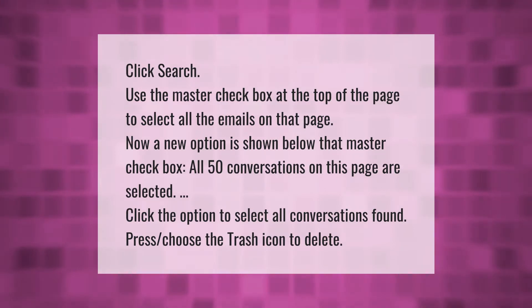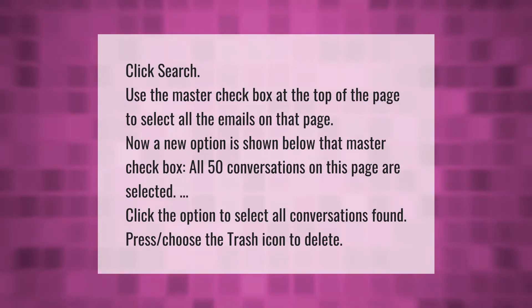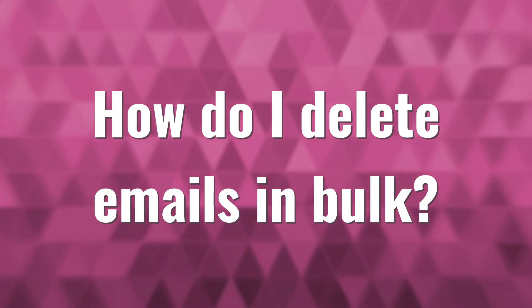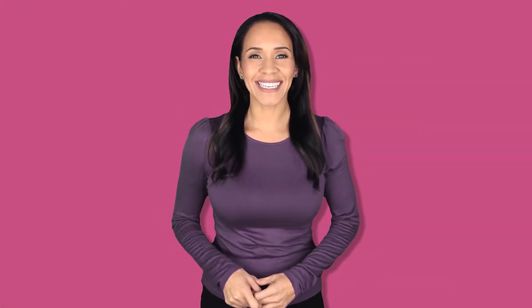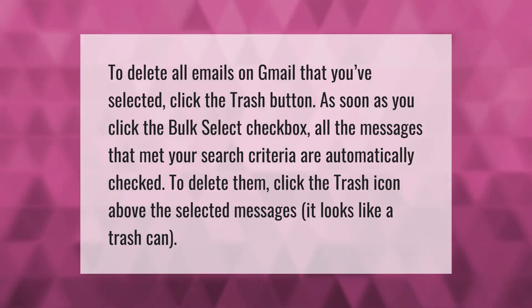Click search, then use the master checkbox at the top of the page to select all the emails on that page. A new option is shown below that master checkbox — all 50 conversations on this page are selected. Click the option to select all conversations found, then choose the trash icon to delete. To delete all emails on Gmail that you selected, click the trash button. As soon as you click the bulk select checkbox, all the messages that met your search criteria are automatically checked.